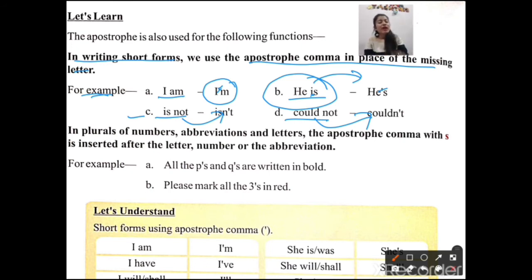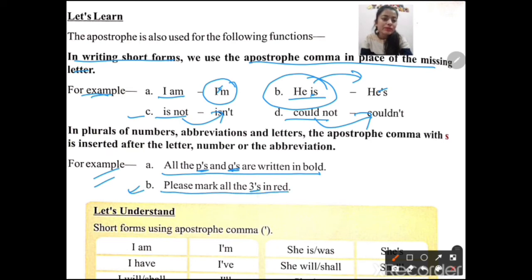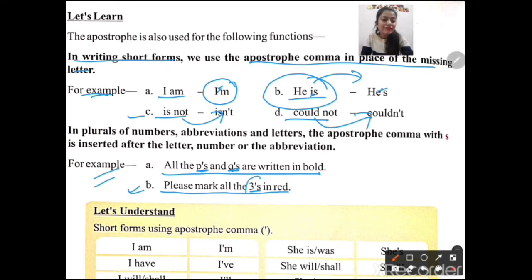For example: 'All the p's and q's are written in bold.' Here p and q each appear more than once in the paragraph, so we write p's and q's using apostrophe 's'. Another example: 'Please mark all the threes in red' — here 'three' appears multiple times, so we write 'threes' with apostrophe 's' after the number.